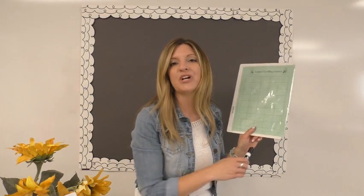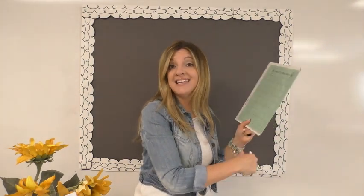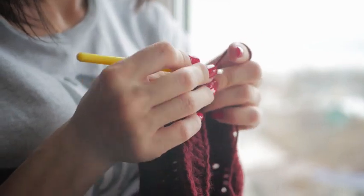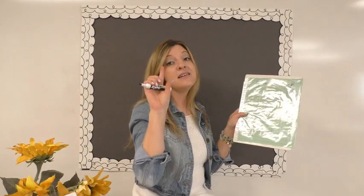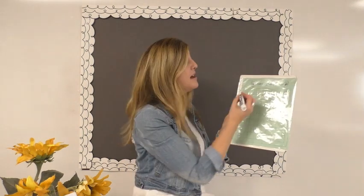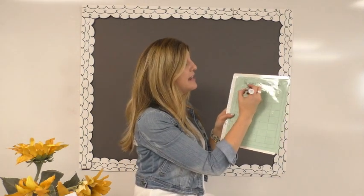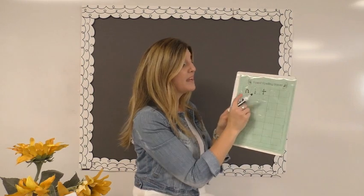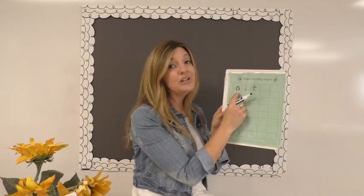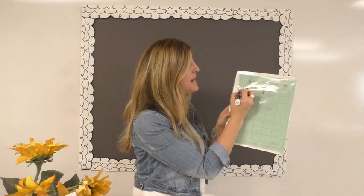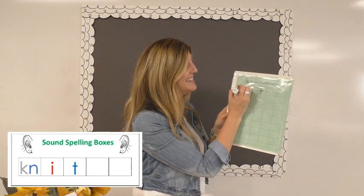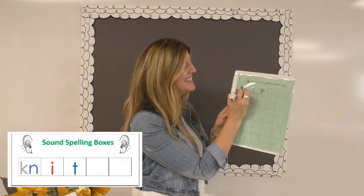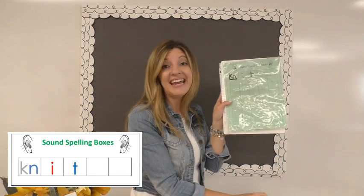Let's start with the word 'knit.' I'm going to learn how to knit so I can knit a baby blanket. Knit could be spelled N-I-T, but knit has the silent digraph K-N.